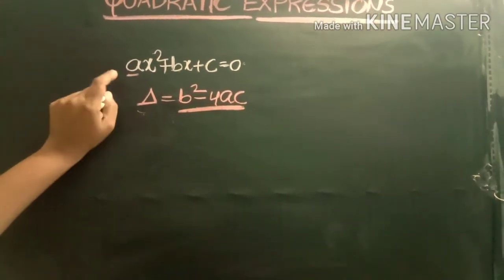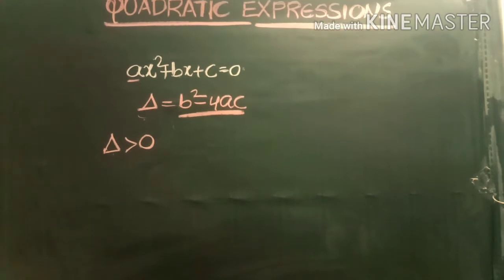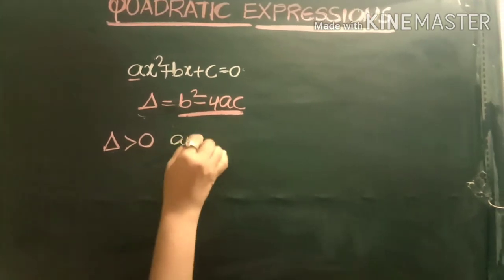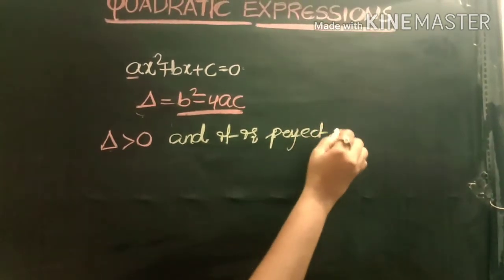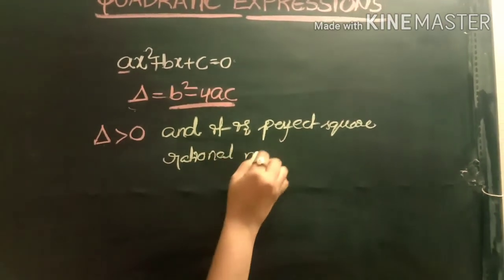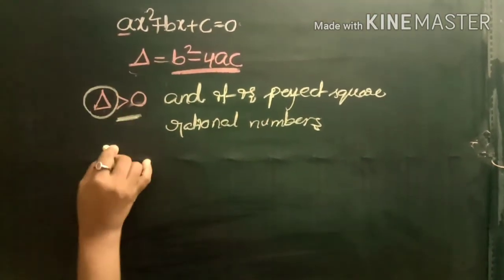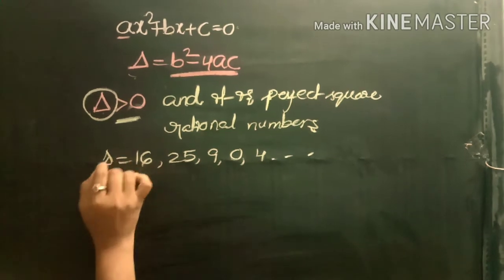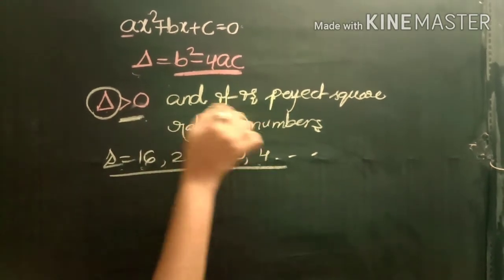Depending upon the value of delta, we can determine the nature of the roots. Case 1: if delta > 0 and it is a perfect square — for example delta equals 16, 25, 9, or 4 — then the roots of the equation are rational numbers.